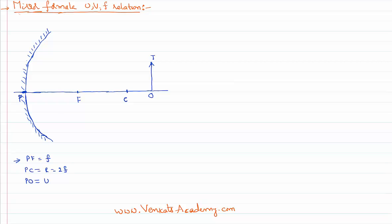That is done based on the image tracing principle — the rules of image tracing. The first rule of image tracing is: if the incident light ray on the mirror from the object is parallel to the principal axis, the reflected light ray is going to pass through the principal focus. So this is what our reflected light ray looks like.